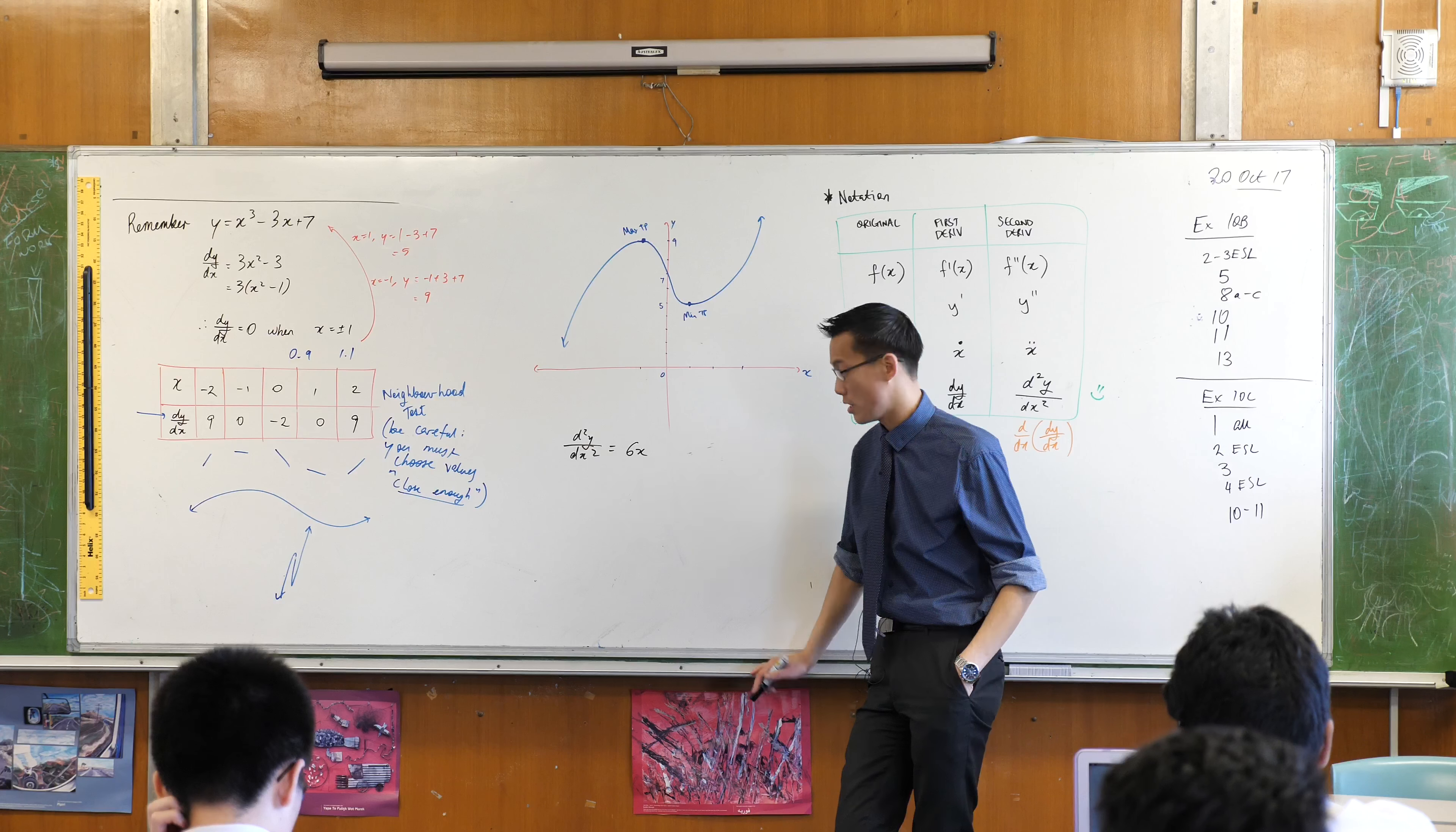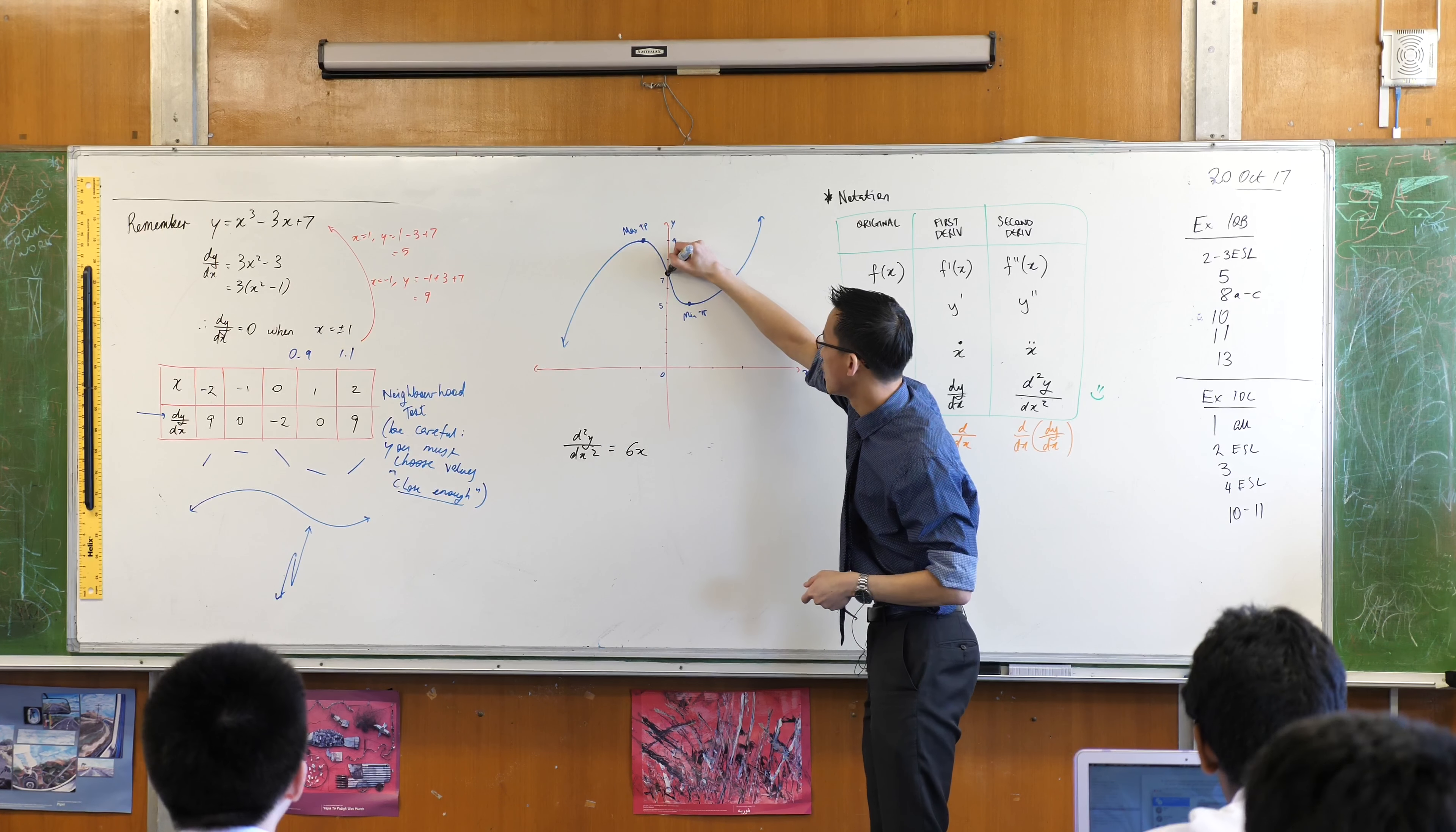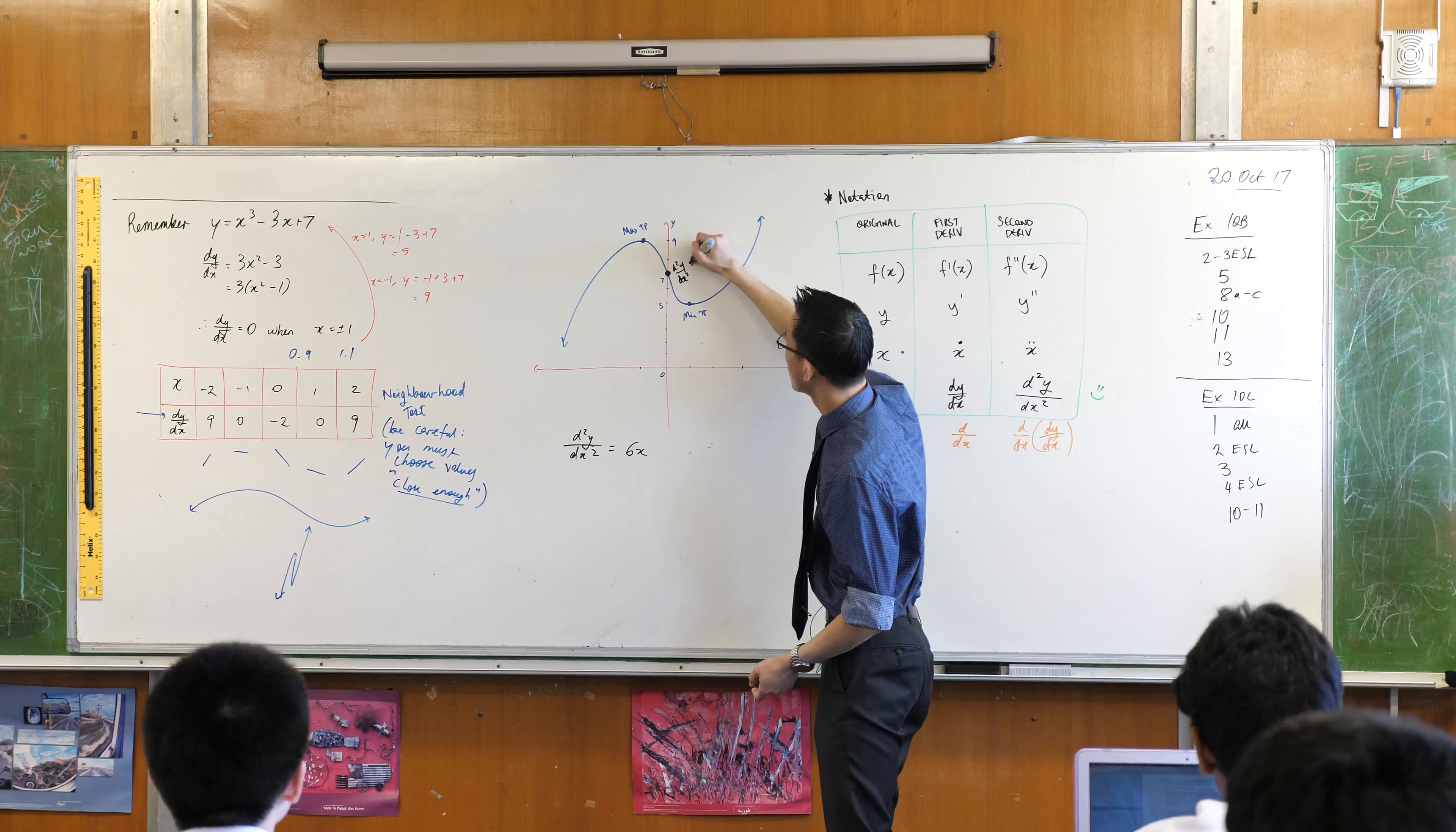And the answer is x equals zero makes the second derivative zero. Where is that? Have a look. Where is it? It's this spot here. See that? At that spot there, I'd love you to add this on maybe in another color if you've got it. At that spot right there, the second derivative is zero.